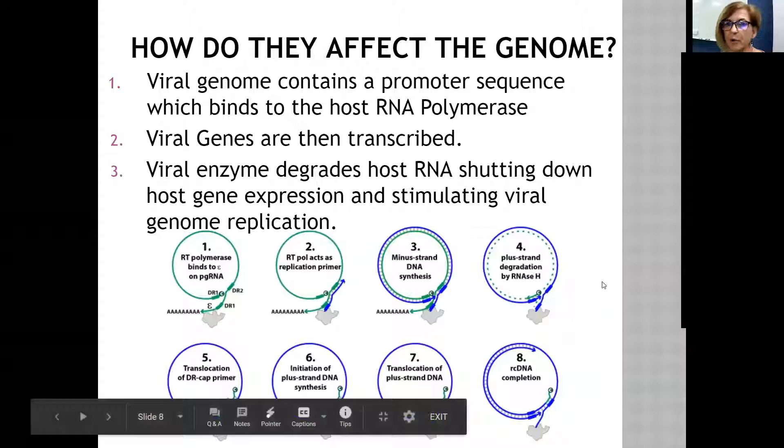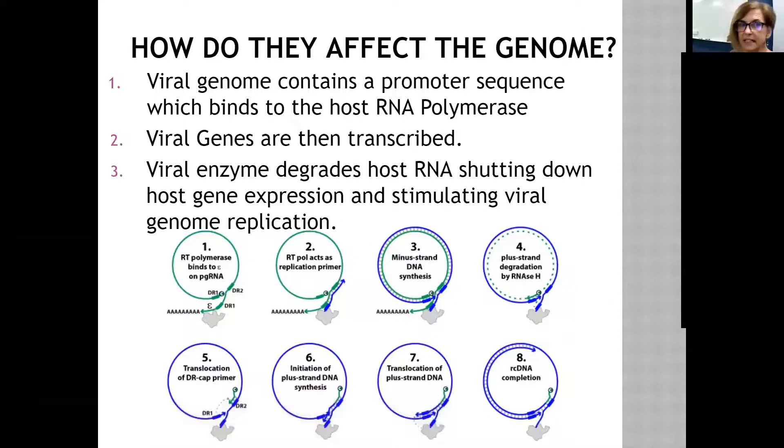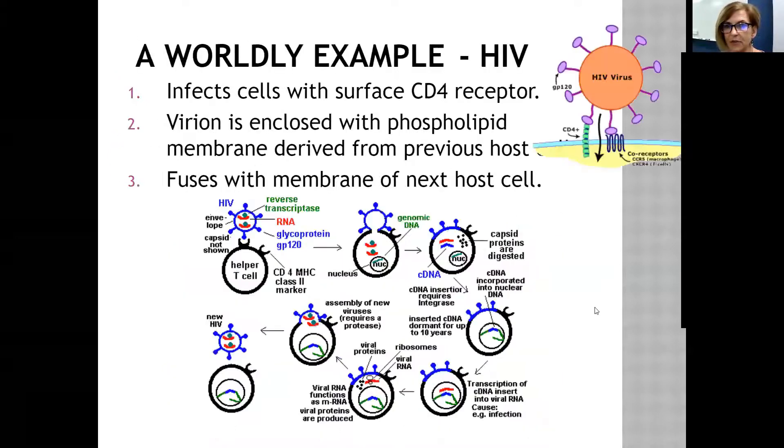How are they affecting the genome? Viral DNA contains a promoter sequence, like our DNA, like bacteria's DNA. Promoter sequences are where RNA polymerase binds. But it's binding to the host's RNA polymerase. It has its own promoter that matches the RNA polymerase, and then the host's RNA polymerase will transcribe the viral DNA. That degrades the RNA, shutting down the host's gene expression. Instead of making the host's proteins, it'll make the virus proteins.